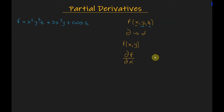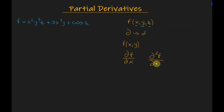The second-order partial derivative is denoted by ∂²f divided by ∂x squared.